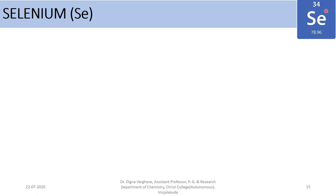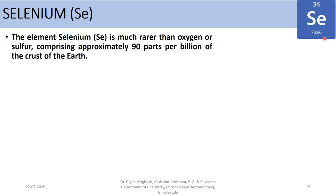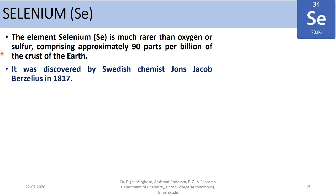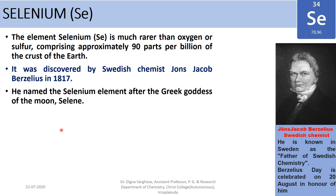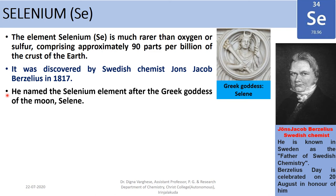Selenium has chemical symbol Se, atomic number 34, and mass number 78.96. The element is much rarer than oxygen or sulphur, comprising approximately 90 parts per billion of the Earth's crust. It was discovered by Swedish chemist Jöns Jacob Berzelius in 1817. Berzelius is known in Sweden as the father of Swedish chemistry, and Berzelius Day is celebrated on 20th August in his honour. He named the element selenium after Selene, the Greek goddess of the moon.